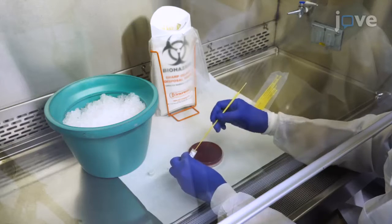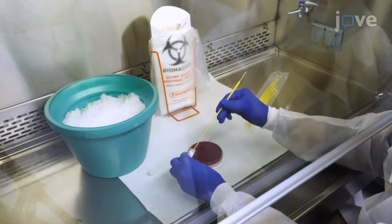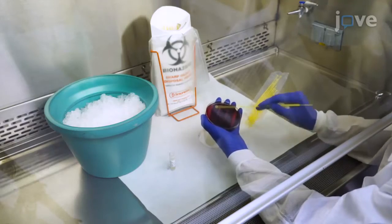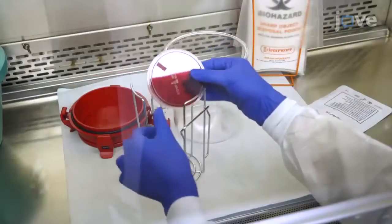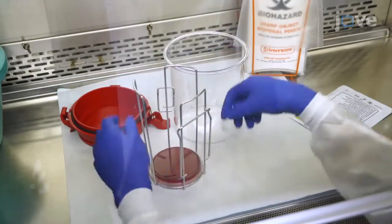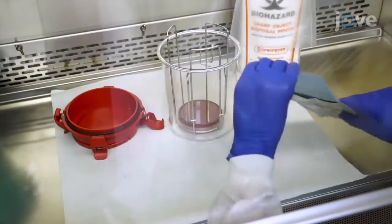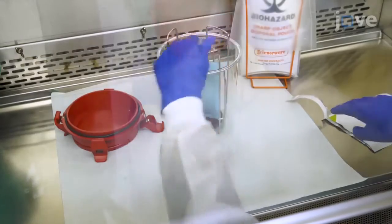Using sterile technique, streak a rehydrated or thawed bacterial stock onto a campylobacter-specific agar plate, and place the plate at 37 degrees Celsius for 48 hours in an anaerobic jar containing a microaerobic atmosphere gas-generating sachet.